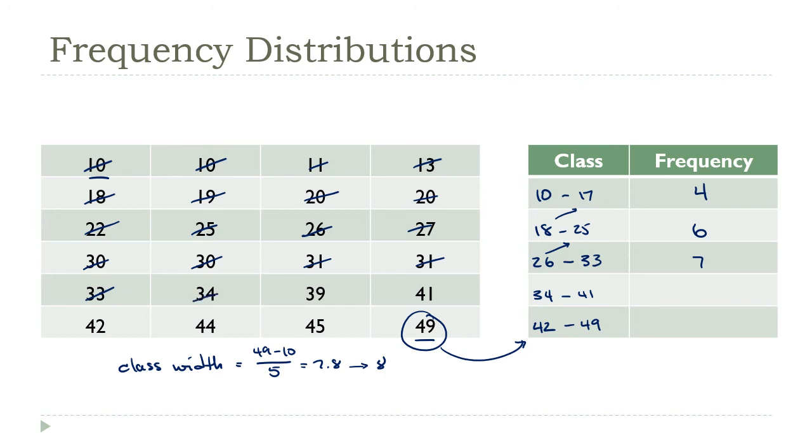34 and 41. There's 1, 2, 3. And then 42 to 49. There's 4 in that last group.